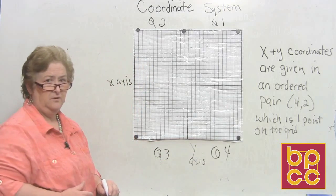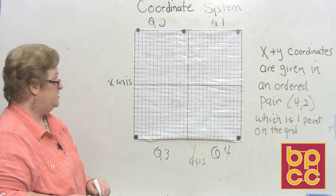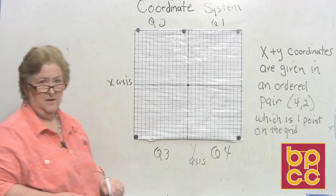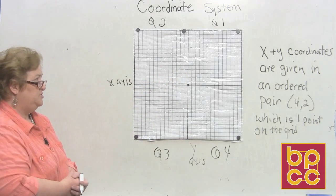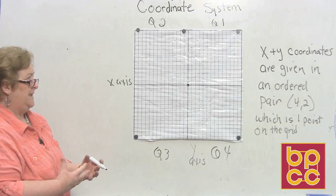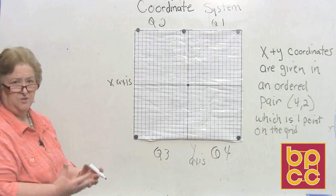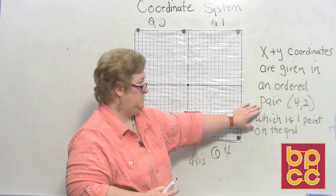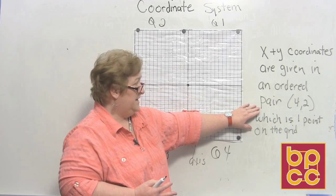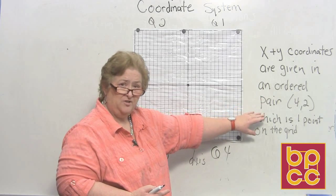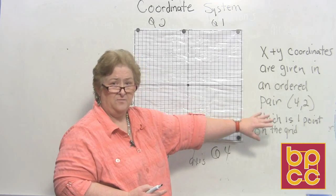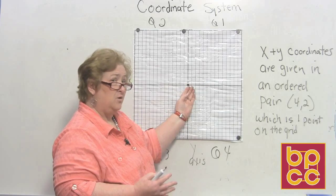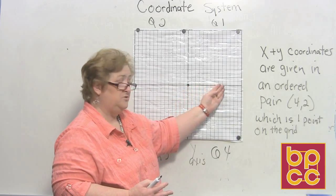When we plot an ordered pair, we always start at the origin, which is where the x and the y intersect. A point has to come to you as an ordered pair — the x is always first, followed by the comma, followed by the y.